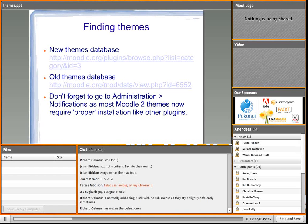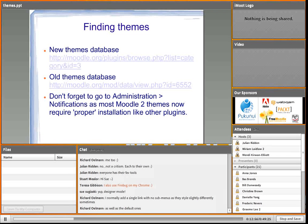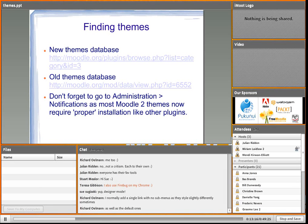Finding themes - there are two main places. The new themes database on moodle.org has a whole bunch of gorgeous new Moodle 2 themes, and there's also the old themes database. The thing to note is that Moodle 2 will not accept Moodle 1.9 themes - you can't download a Moodle 1.9 theme and install it on your Moodle 2 site. Moodle 2 has completely changed the way that themes work, in my humble opinion for the better.